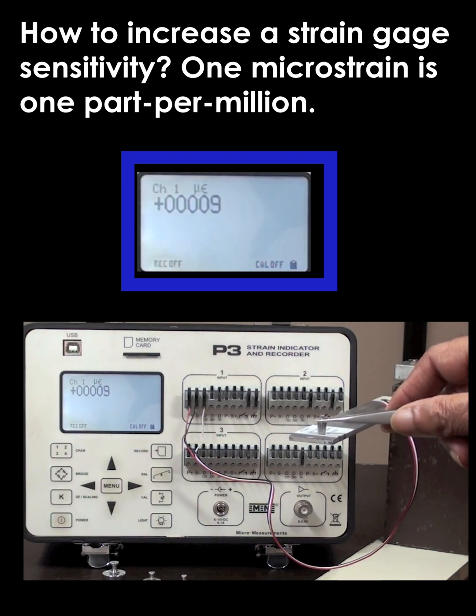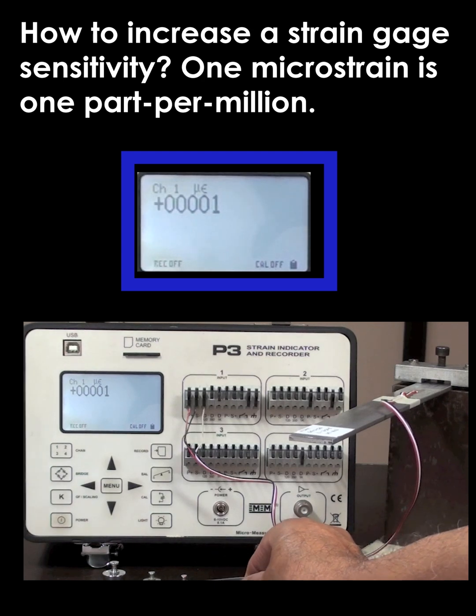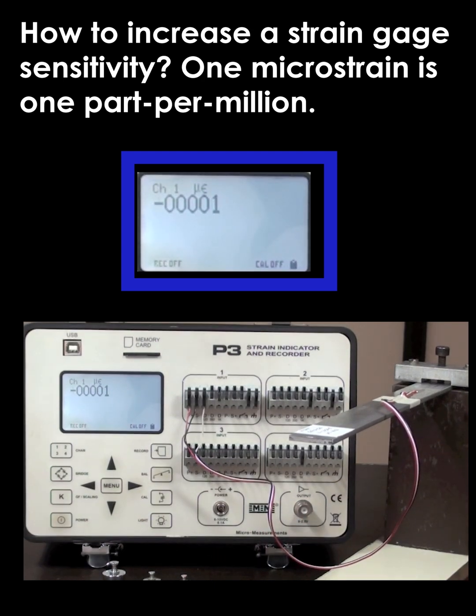So this gives you an indication of not only the resolution of the blue box, which is our P3 strain indicator, but also the resolution and capability of the electrical resistant strain gauge.